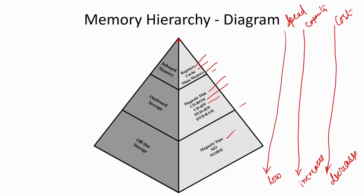Also, if you go from the tip to the bottom of the pyramid, cost decreases. Since higher-speed and higher-performance devices cost more, as we go down the hierarchy cost gradually decreases and we get low-cost memory devices. So if we go for better performance we have to pay more cost. Today we are going to discuss about the working principle of this particular magnetic disk.